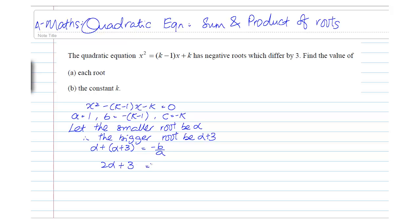2 alpha plus 3 is equals to k minus 1 over 1. So, that will simplify to be 2 alpha plus 3 equals to k minus 1. Equation 1.